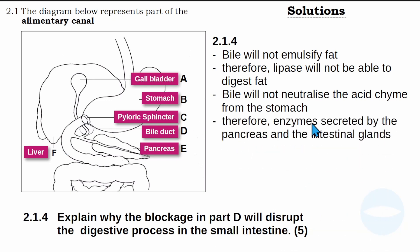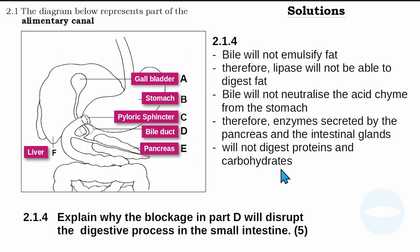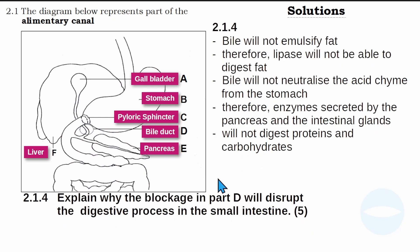Therefore, enzymes secreted by the pancreas and the small intestinal gland will not be able to digest protein and carbohydrate. If there is a blockage of the bile duct, digestion of protein and carbohydrate will not work because the chyme will be acidic, and the enzymes responsible for breaking down protein and carbohydrate function under alkaline conditions.